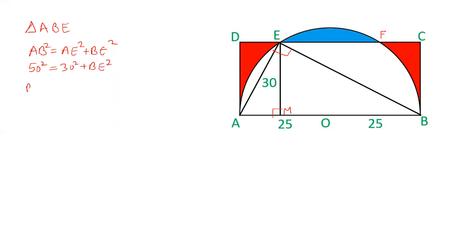Hence the value of BE will come out to be 40, and this can directly be calculated by taking Pythagorean triplet 3-4-5. By Pythagorean triplet, if the hypotenuse is 50 and one of the sides is 30, that is 10 times 3, so the other side will be 10 times 4, that is 40. So this length is 40.